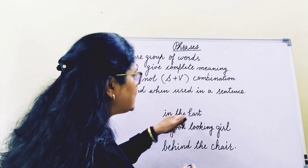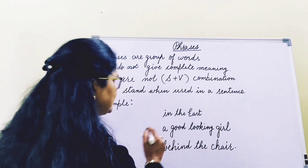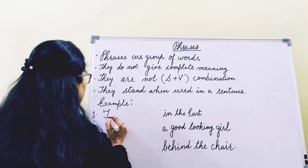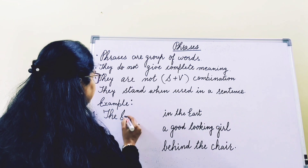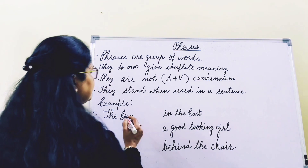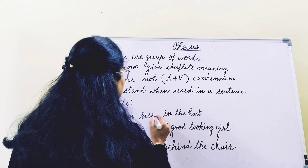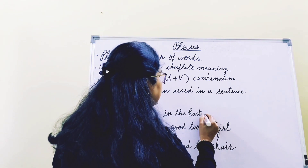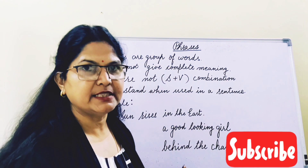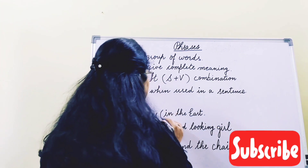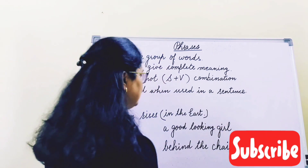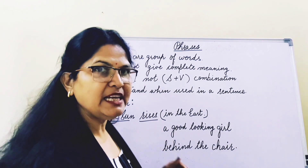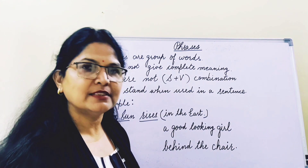So we need to add a combination of subject and verb which really fits with this phrase. Let's see — 'in the east.' Very simple, we can write: 'The sun rises in the east.' The sun is subject and rises is a finite verb. So 'the sun rises in the east' — now it's giving a complete sense. So you saw, 'in the east' was a phrase. When 'the sun,' a subject, and 'rises,' a finite verb, is added, then it's giving a complete sense.